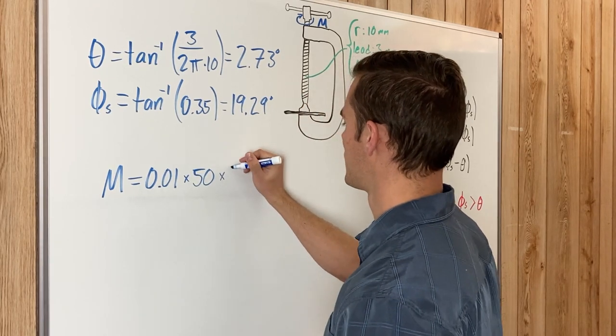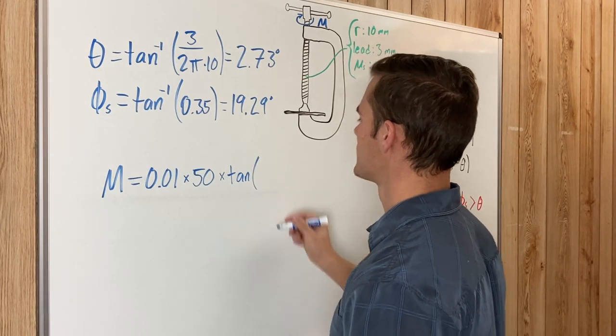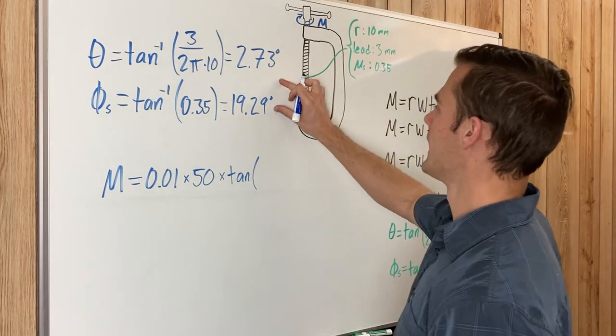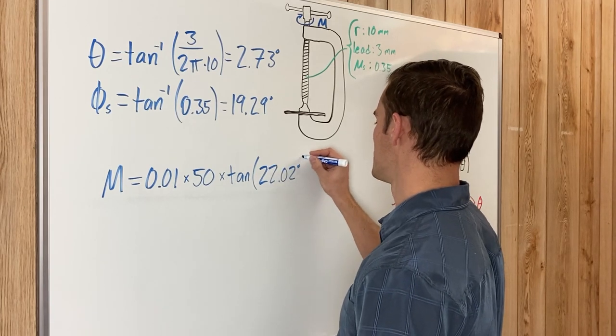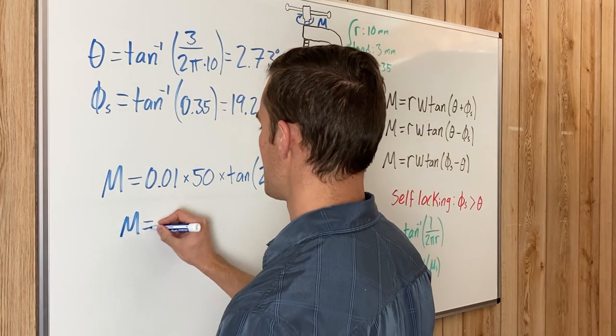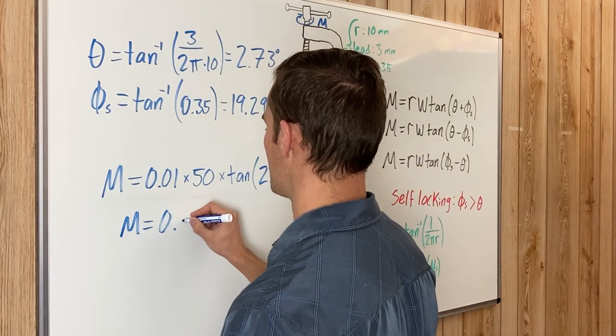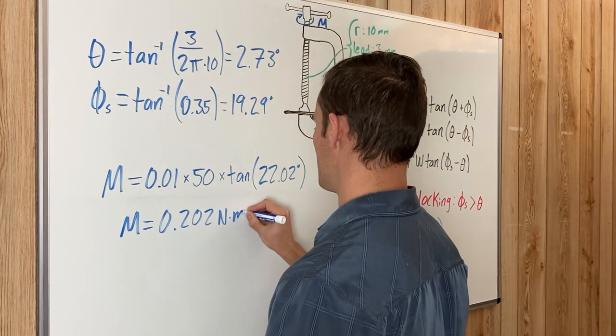The screw is going to be pushed on by 50 newtons of force, and then multiply that by the tangent of phi plus theta. Add those together and you get 22.02 degrees. Calculating this, we end up getting M equals 0.202 newton-meters.